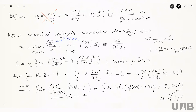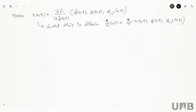Now that we have the Hamiltonian and have formulated how to go from the Lagrangian to the Hamiltonian in terms of fields, we can go for the equations of motion. This equation, which defines the canonical conjugate momentum, is to be used to rewrite the time derivative of the field in terms of the field itself, the canonical conjugate momentum, and spatial derivatives — but not time derivatives.